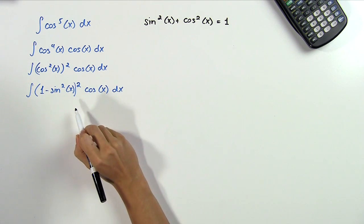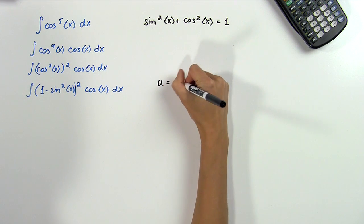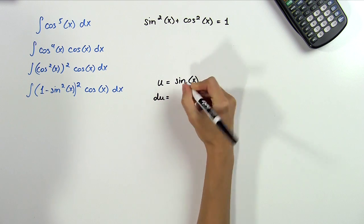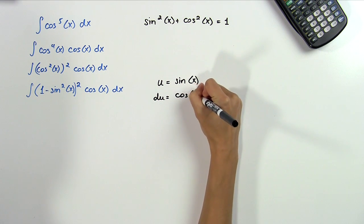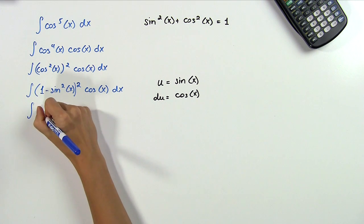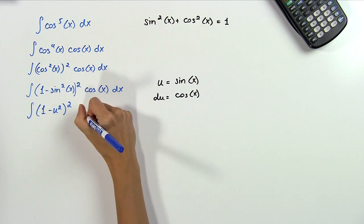This looks a lot more complicated than what we started out with, but it's actually going to allow us to do a simple u substitution. If we let u equal sine x, then du will be cosine x. So now we can go ahead and do our u substitution and we get the integral of 1 minus u squared all squared.